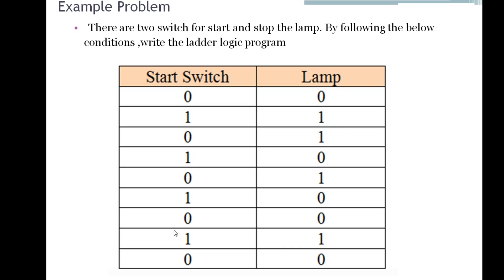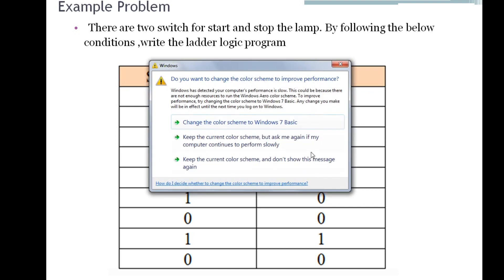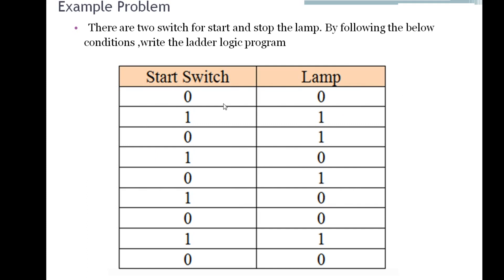The input is having multiple states and the output is also changing for each state. Whenever you are having multiple states of input and output for the same program, you need the concept called memories. Without memories we cannot solve this problem. By using memories, we will be storing the state of the start switch in a memory coil. We need to store all the states of inputs and in the last run join all those memories to establish the corresponding outputs.